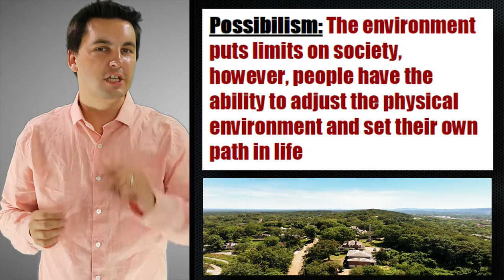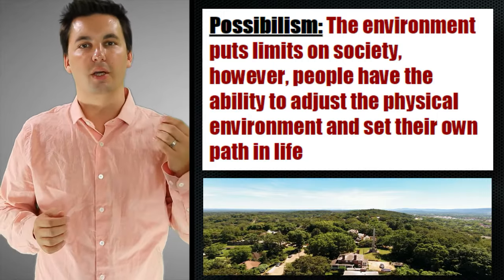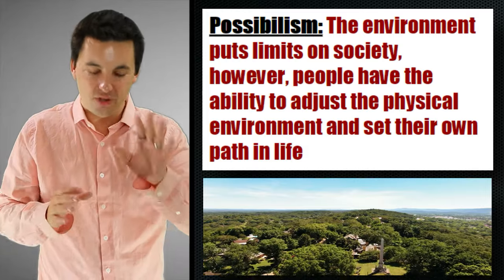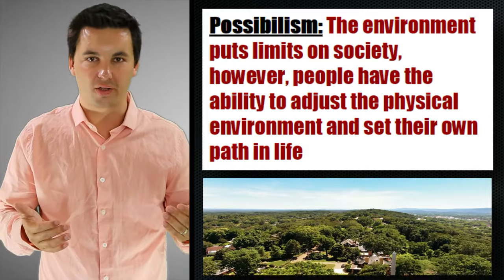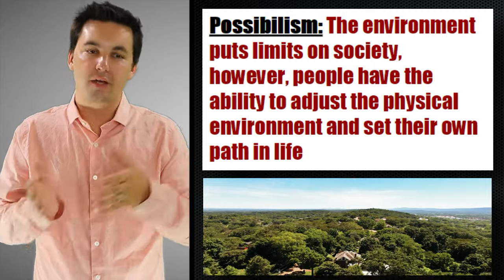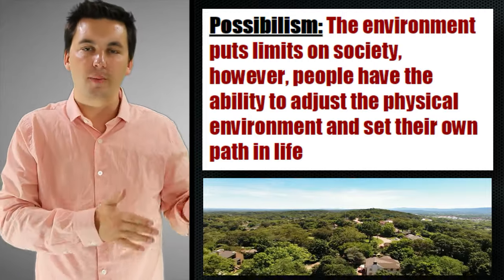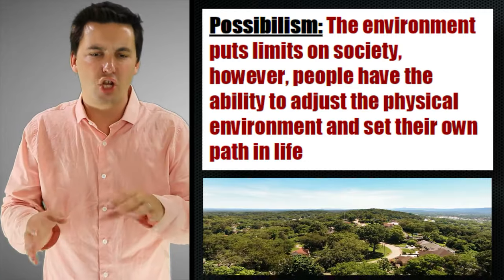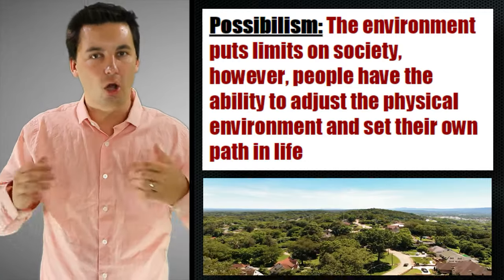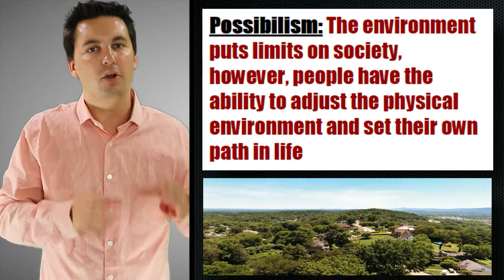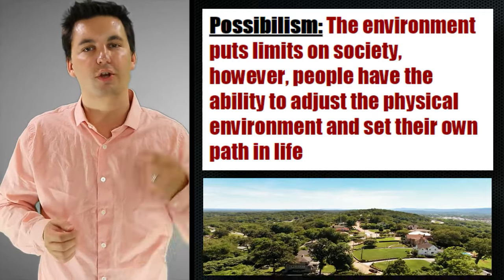If you lean more toward people having a say, you're probably in favor of environmental possibilism. This is the idea that yes, the environment has an impact on society, but people also have an impact on the environment and have a lot more say in their own success than environmental determinism gives them. The environment can be shaped and modified by culture, and culture will continue to adapt and change to the environment. Over time, it's up to the culture and the people living there whether they succeed or fail.